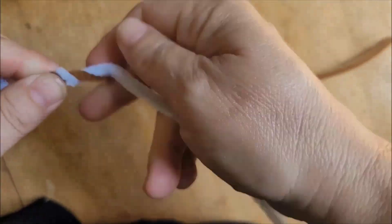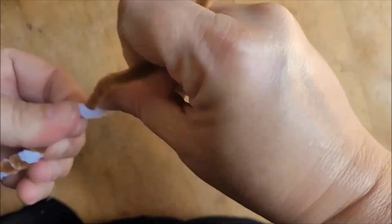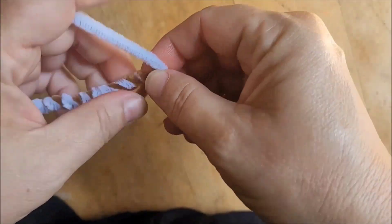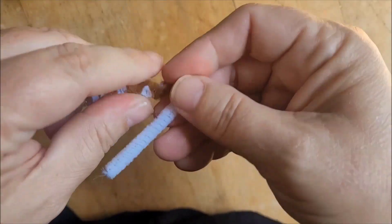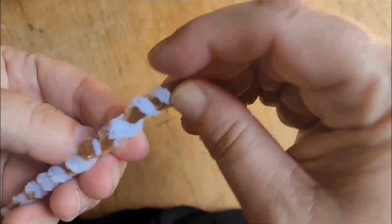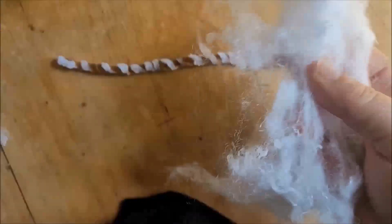I'm starting off by twisting two pipe cleaners, or chenille sticks, together. I'm bending the ends over so that the pokey ends are blunted, and to make my worm a little shorter than the full length of the pipe cleaners.